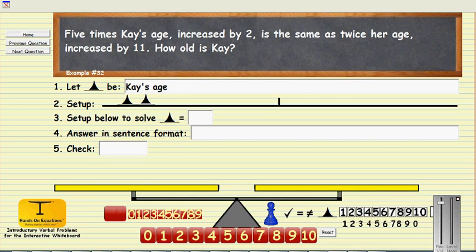So we have two, three, four, five. Five times k's age increased by two is the same thing as twice her age increased by 11. So this then is the setup, the pictorial setup for this example.